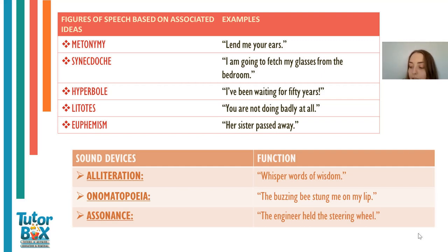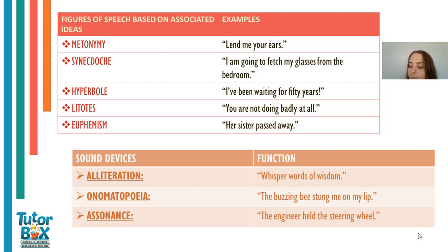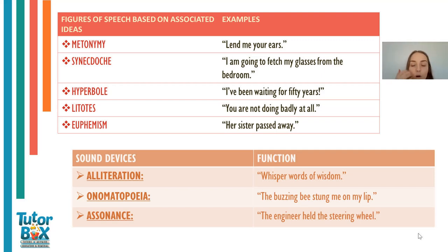A hyperbole is an exaggerated statement that is not meant to be taken literally. The function is that it expresses intense emotion and emphasises the fact stated. A litotes is an ironical understatement, especially expressing an affirmative by the negative of its contrary. The function is that it emphasises the statement. A euphemism is the substitution of a vague or mild expression for a harsh or direct one. The function is to soften your words so it doesn't sound so harsh or rude.